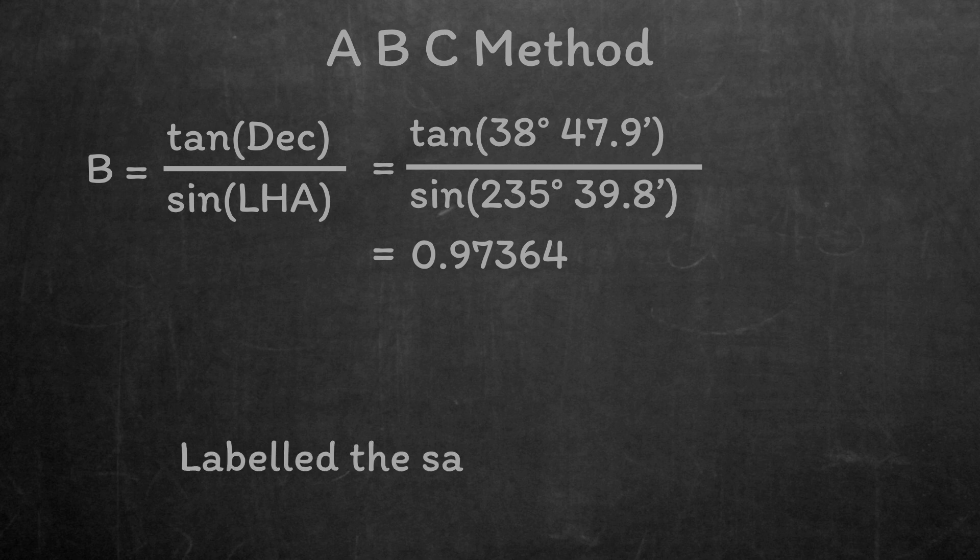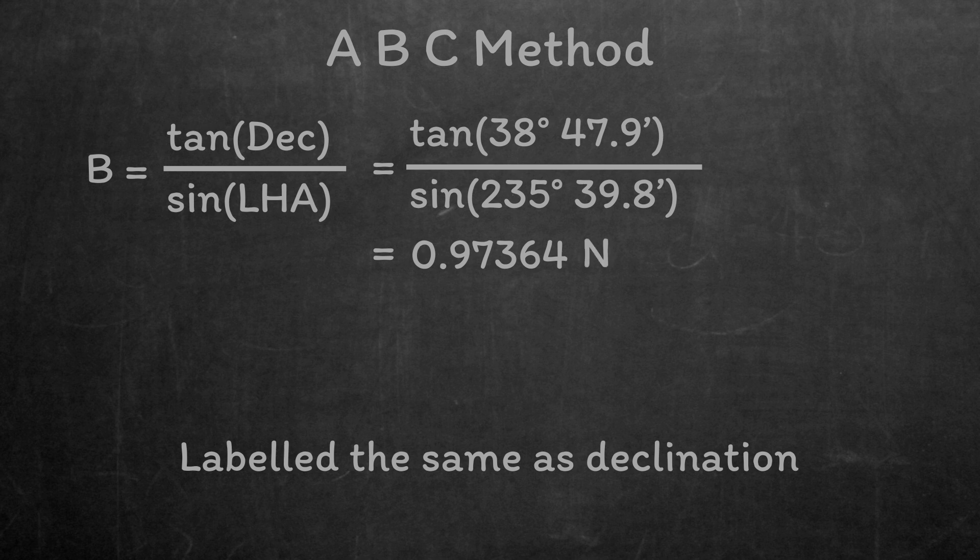The label for B is going to be just the same as the declination, it's always the same. So we get 0.97364 north.